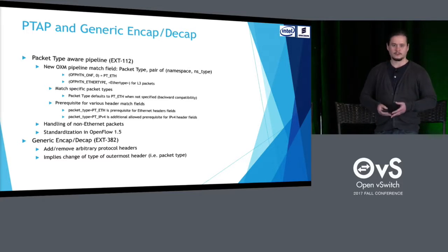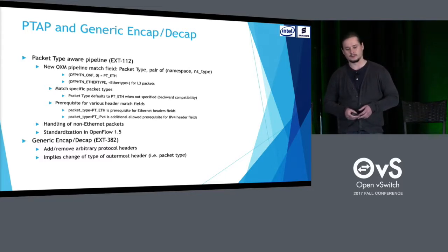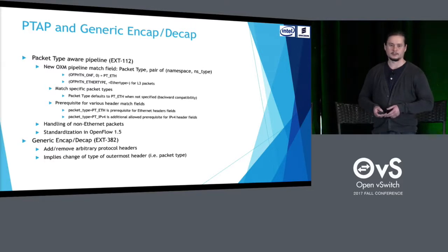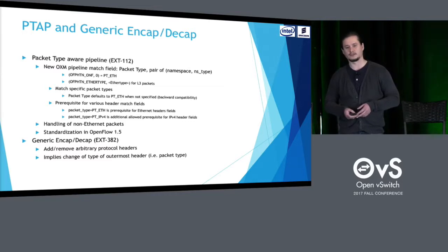The packet type pipeline is an OpenFlow extension. It introduced a new OVS pipeline match field — the packet type — which consists of a namespace and a namespace type. You can see two examples: the first one is for an Ethernet packet, and the second one is for a layer 3 packet. The Ether type can specify exactly what kind of layer 3 packet it is. This new field can be used in matches, and it also acts as a prerequisite for various header match fields.